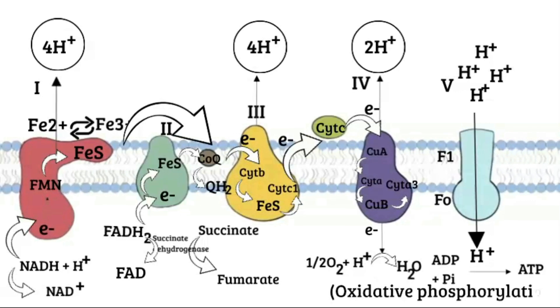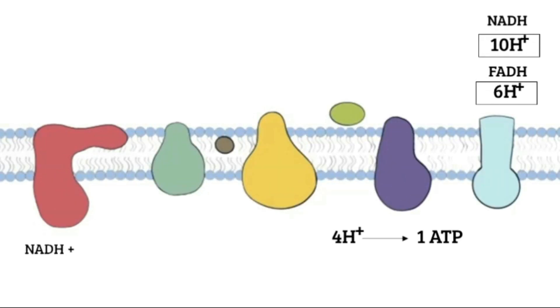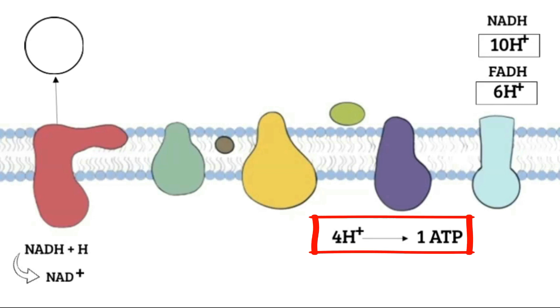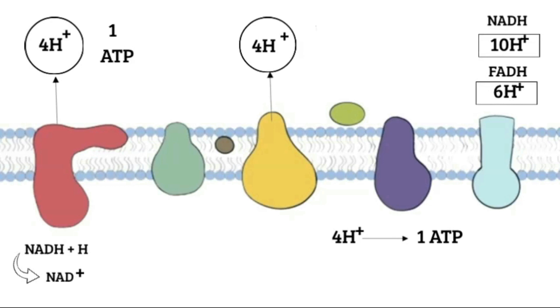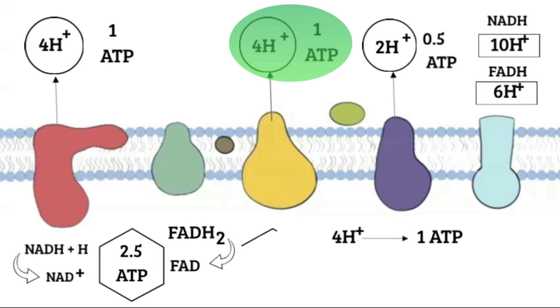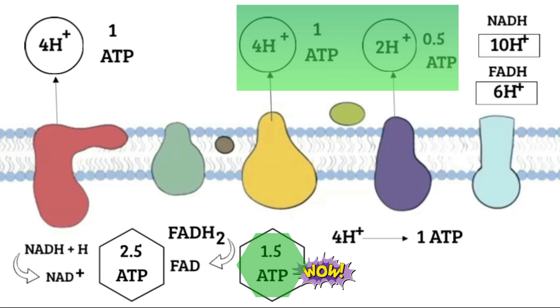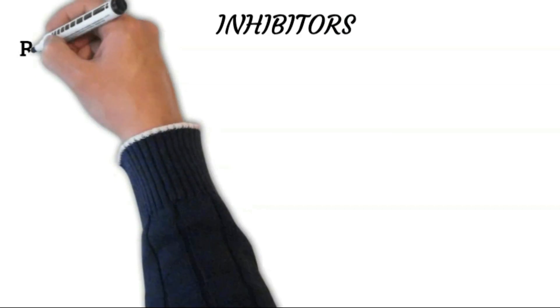For energy calculation: if the cycle starts from NADH, 10 hydrogen ions are involved; if it starts from FADH2, six hydrogen ions are involved. For every four hydrogen ions, one ATP molecule is released. Starting from NADH: 4 ions → 1 ATP, 4 ions → 1 ATP, and 2 ions → 0.5 ATP, giving a total of 2.5 ATP. Starting from FADH2: 4 ions → 1 ATP and 2 ions → 0.5 ATP, giving a total of 1.5 ATP.